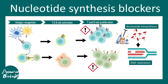Overall, azathioprine blocks T cell and B cell proliferation by acting like a nucleotide analog that gets incorporated into the replicative machinery, halting the replication process.